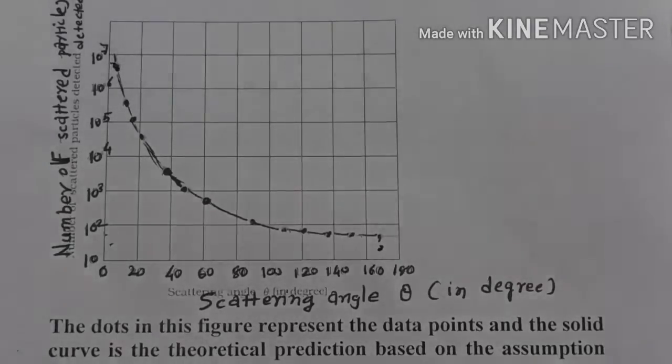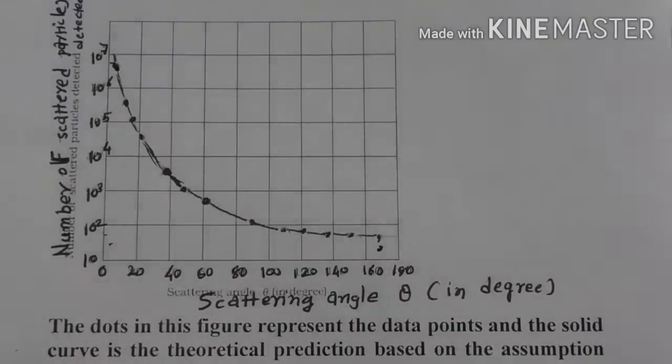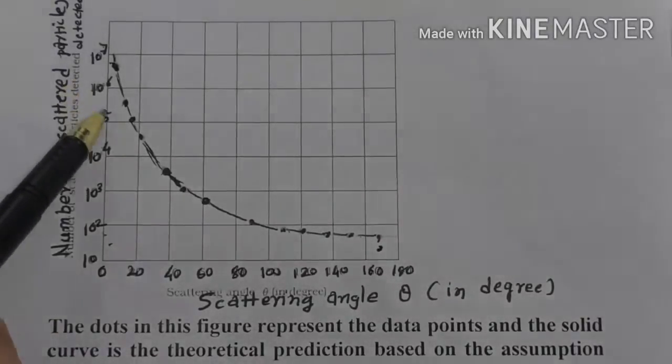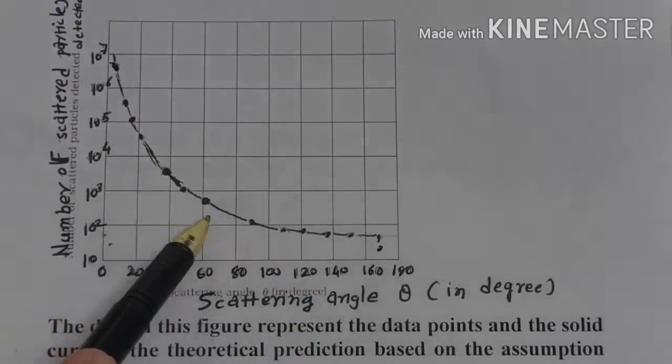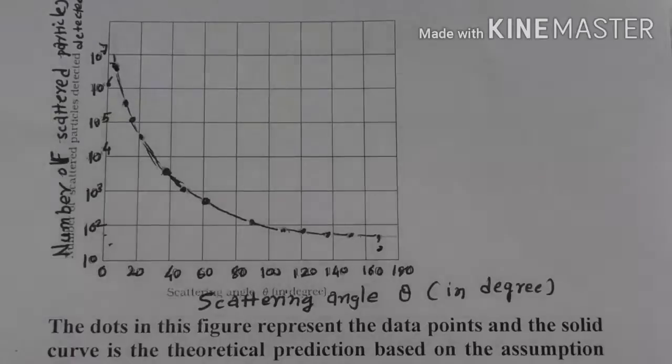If any phenomena, it's an experimental phenomena as well as theoretical. According to the theory, the prediction is a solid curve. The dots are experimental data. You can see this experimental result nicely matched with the theoretical curve.